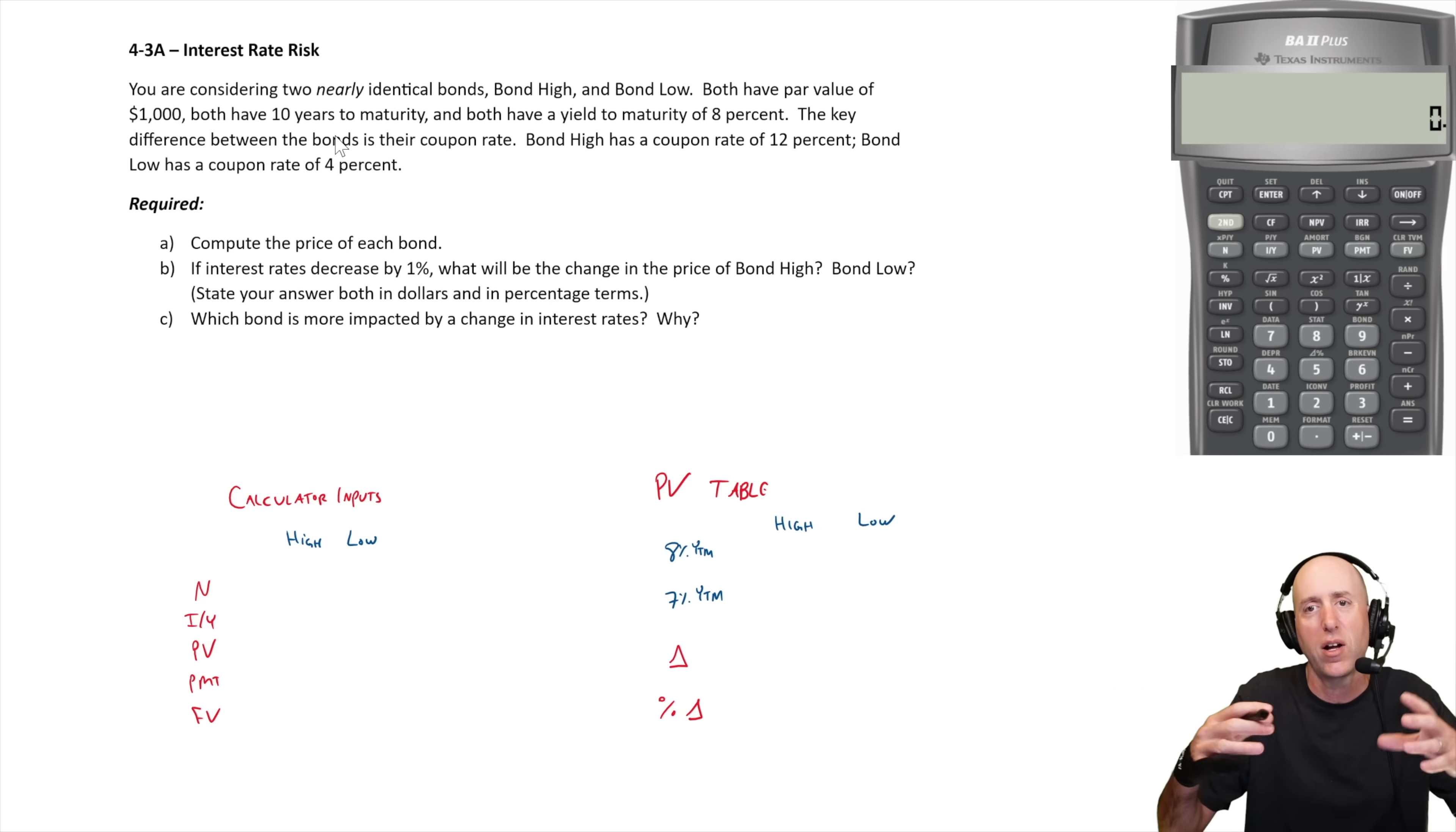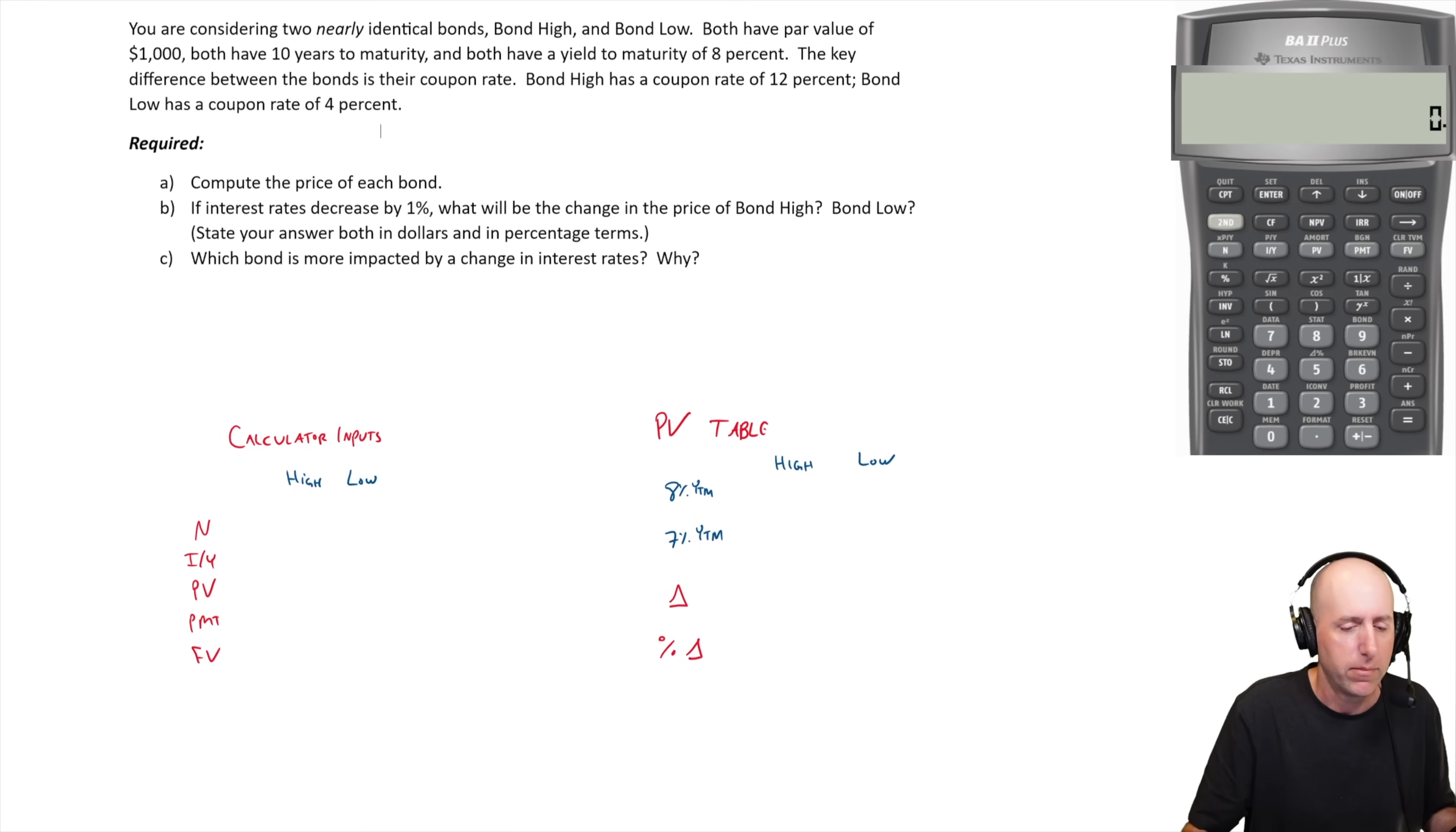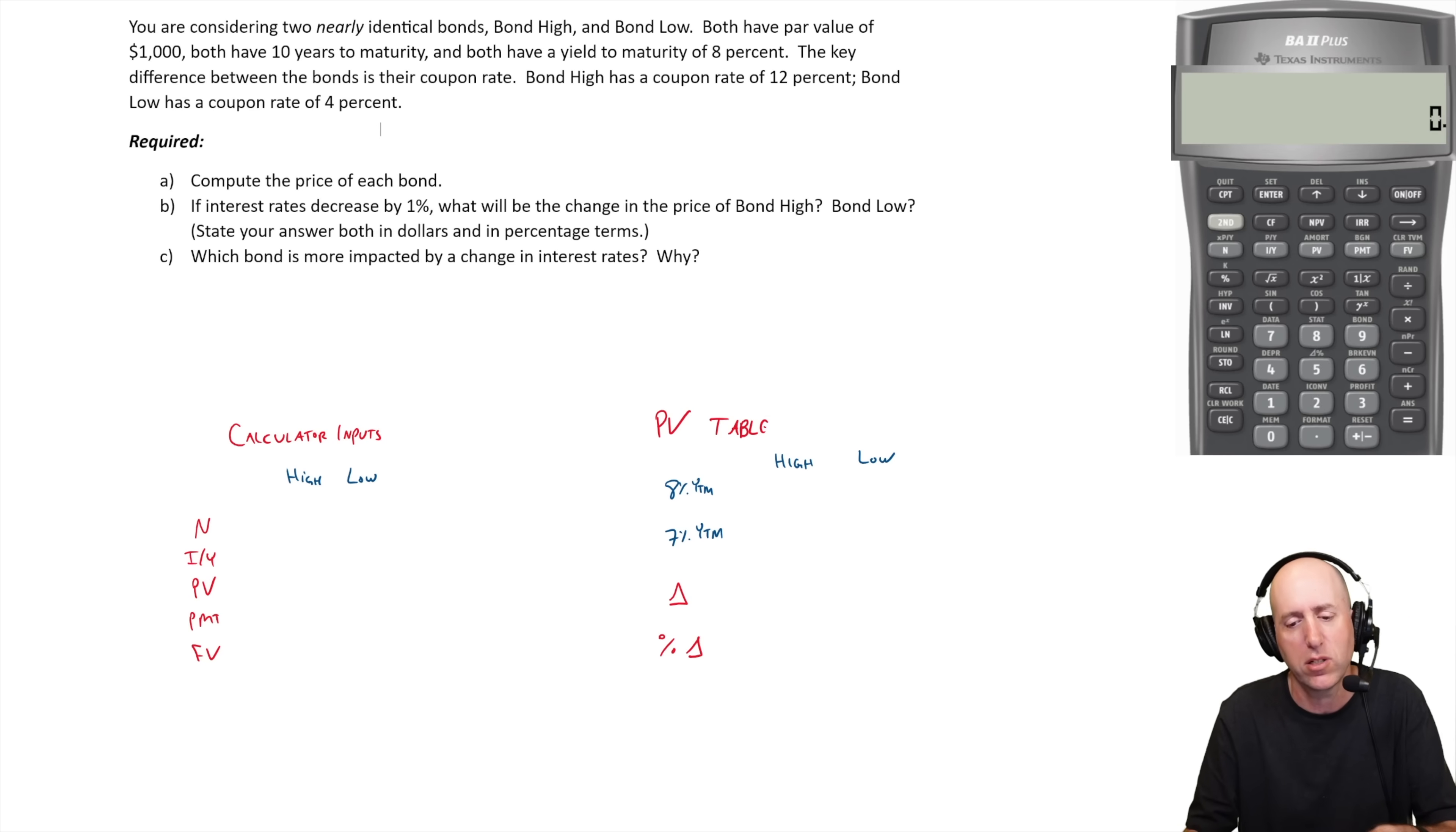The first job is just to compute the price of the bonds. They're not the same, they're not $1,000, they're going to be some other amount. Bond high, with yield to maturity 8% and coupon 12%, is going to be a very large premium. Bond low is going to be a very significant discount because it's lower than the yield to maturity. I'll use the financial calculator, then I'll do one of these by hand.